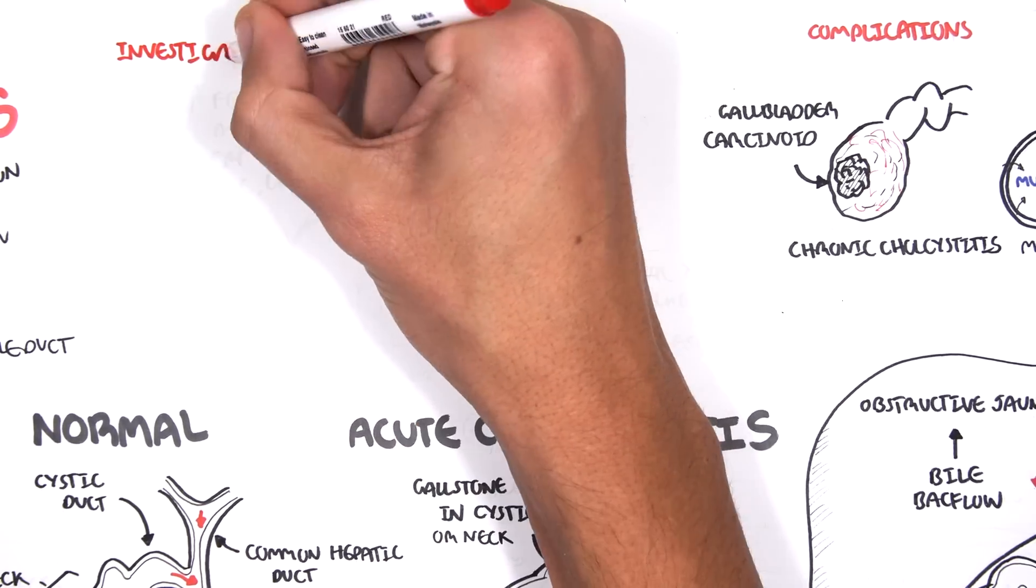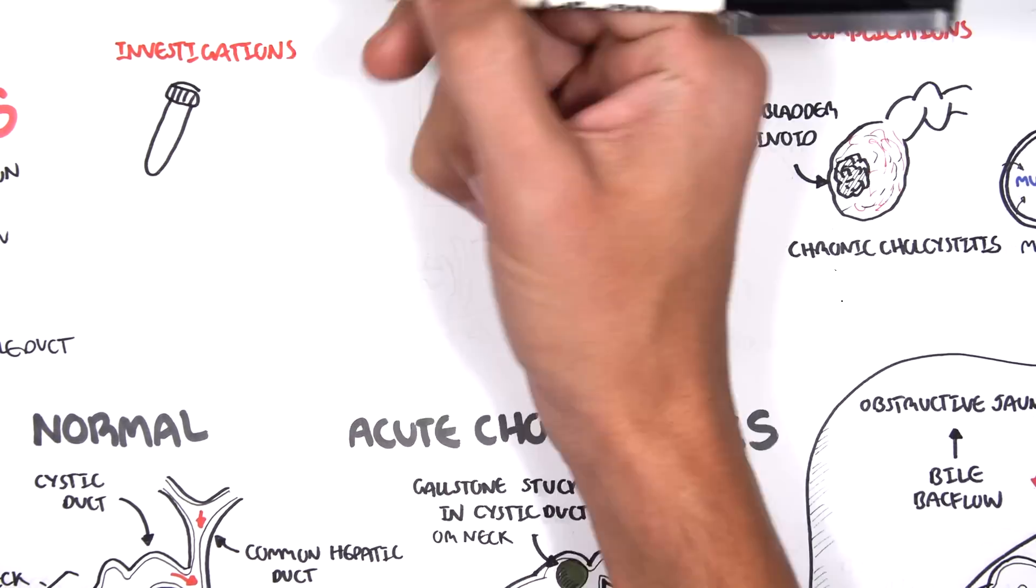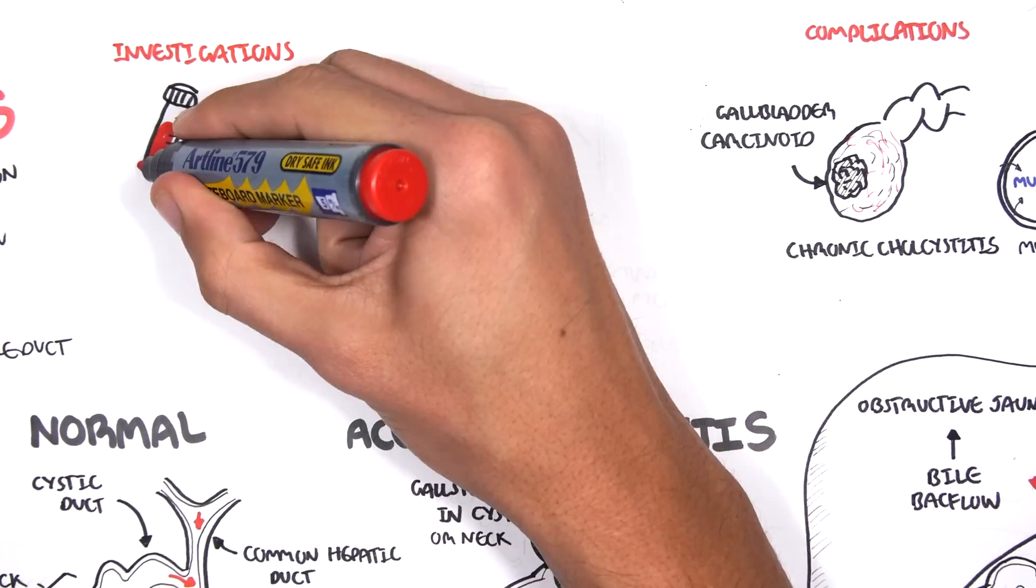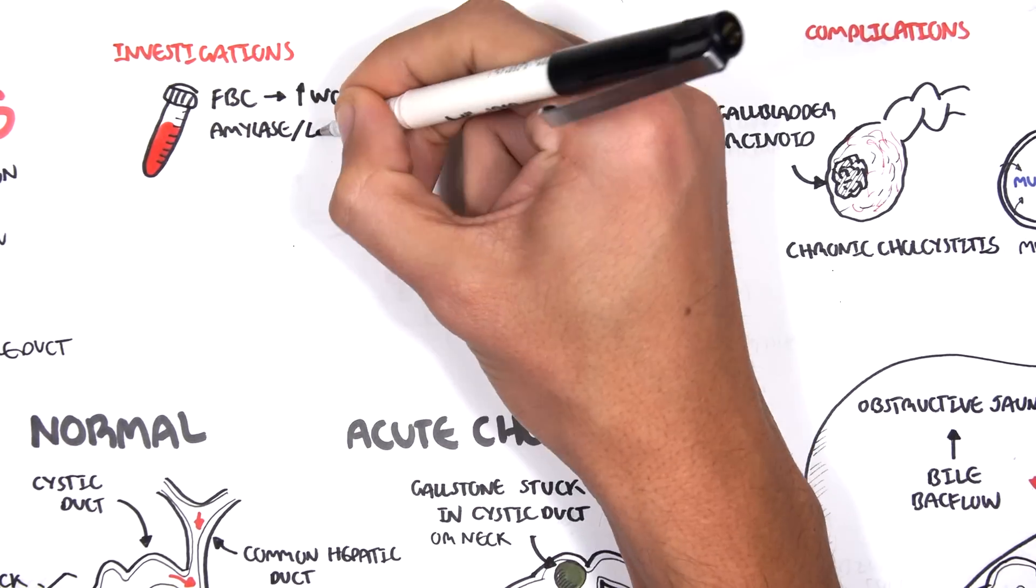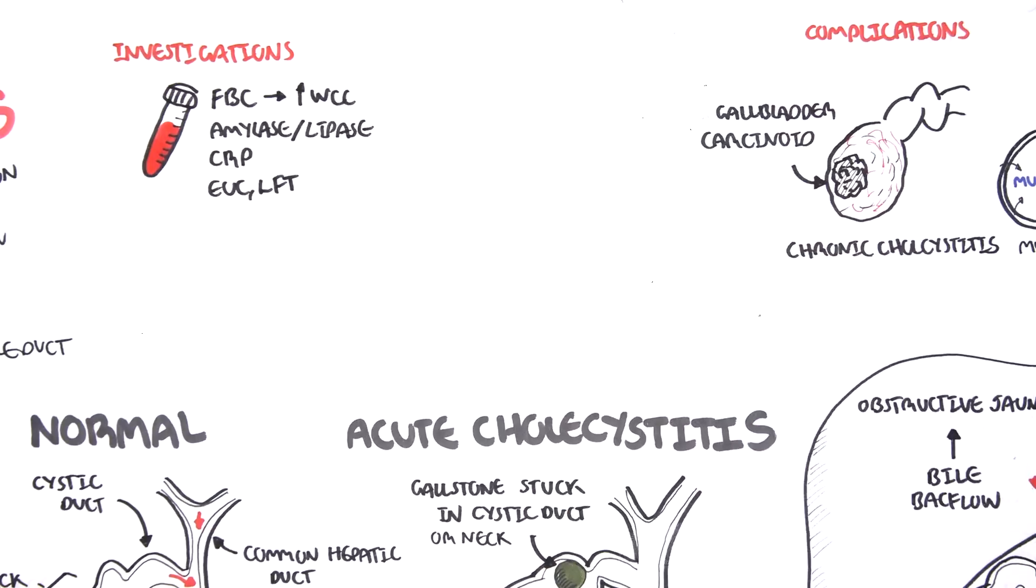Investigations that can be performed with a person suspected of biliary tree problems include full blood count, which may show raised white cell counts, amylase lipase to check for pancreatitis, CRP, EUCs and LFTs. And LFTs are important because there will be abnormal LFTs with a problem that occurs in the biliary tree system.